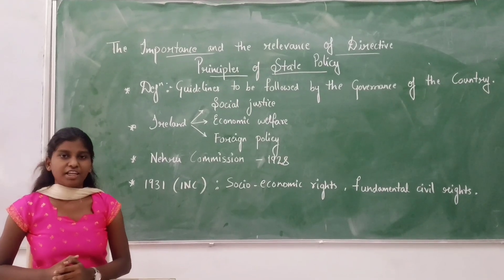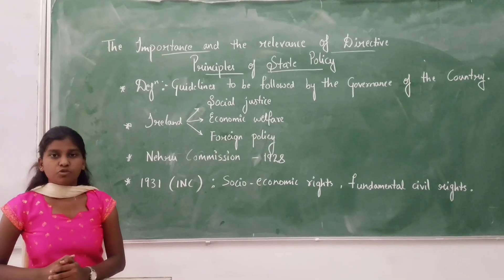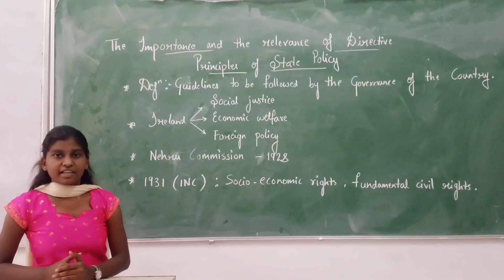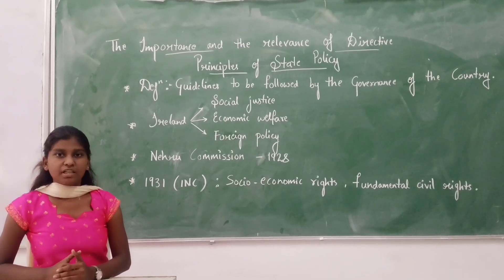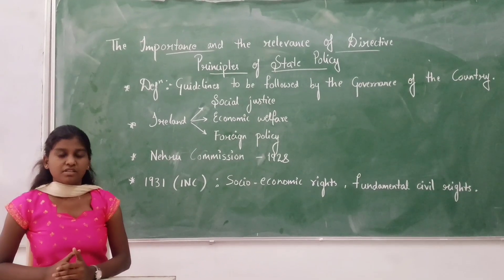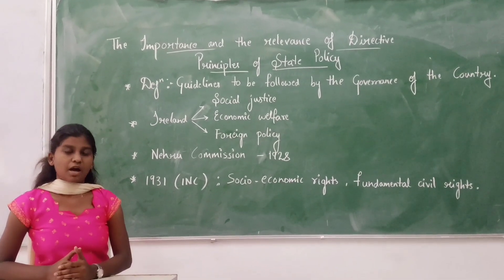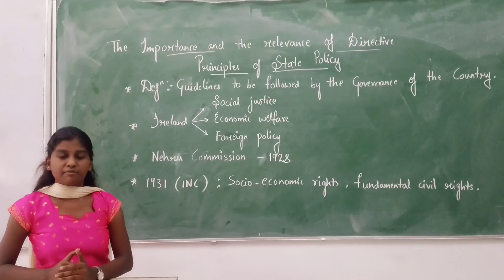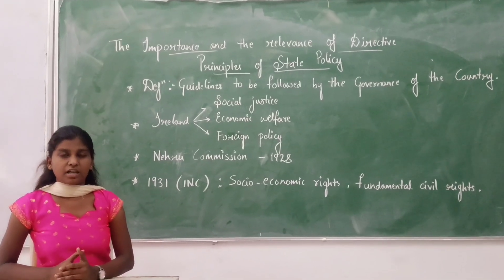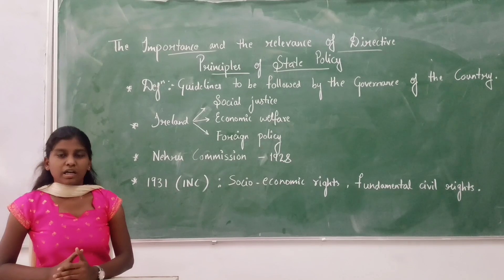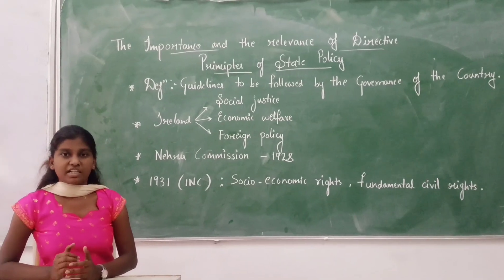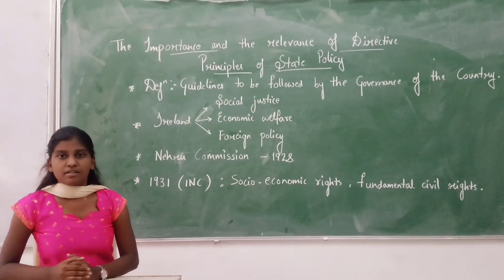When India got independence on August 15, 1947, the first task was to develop a constitution for the nation, undertaken by the Constituent Assembly. Dr. Rajendra Prasad became the first president of our country, and Dr. B.R. Ambedkar became the chairman of the drafting committee, overseeing committees and subcommittees responsible for various subjects.